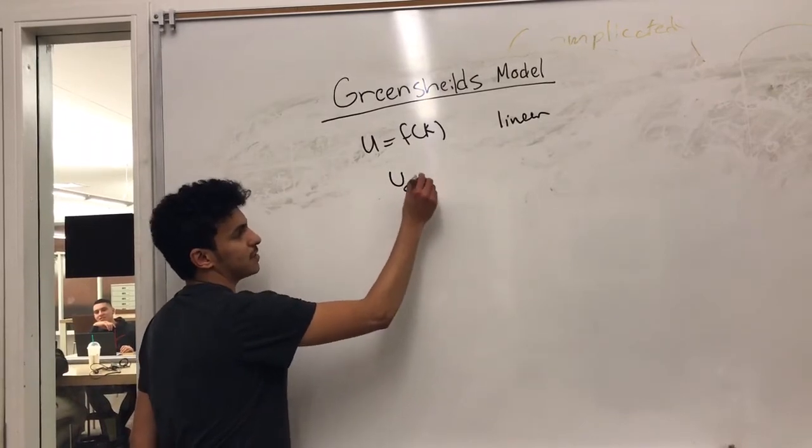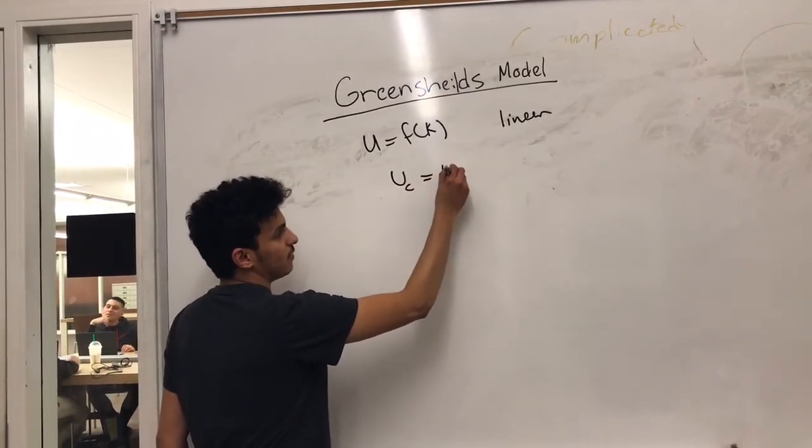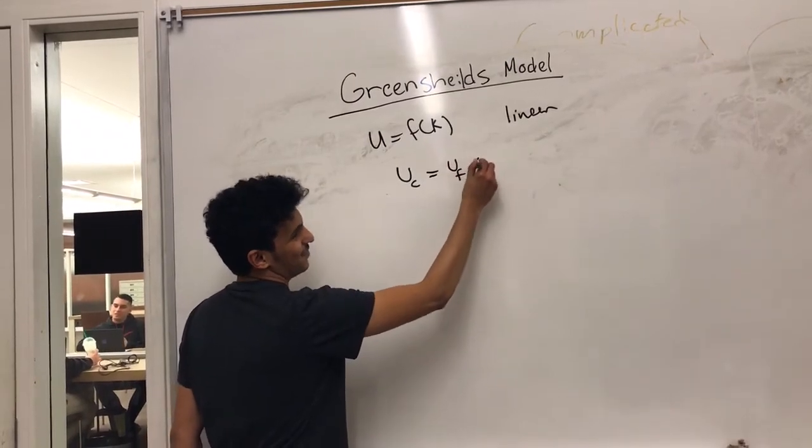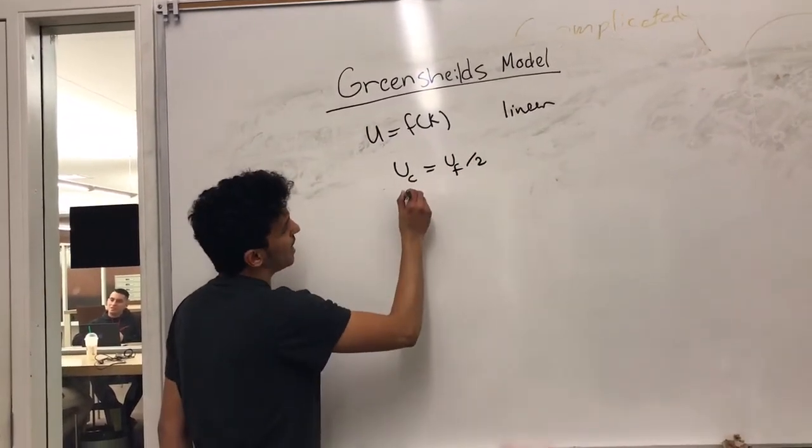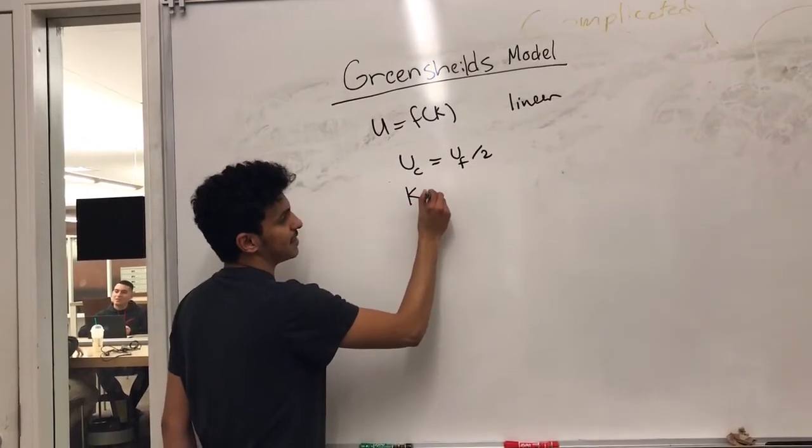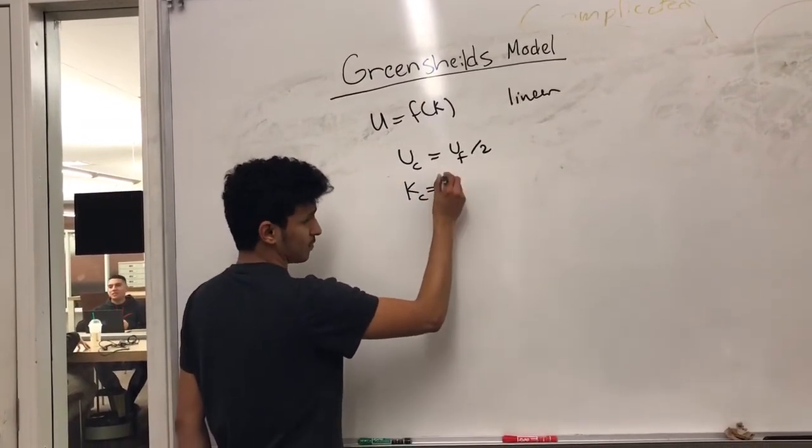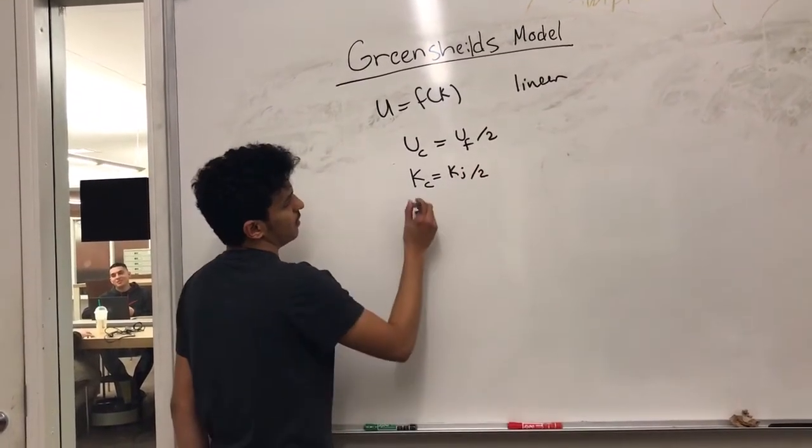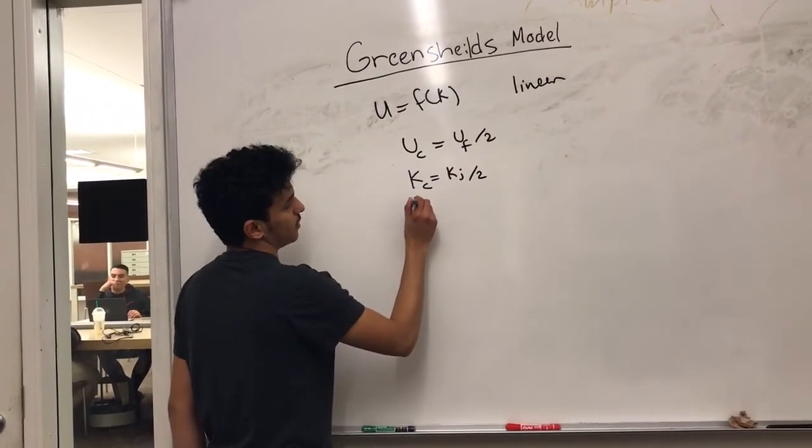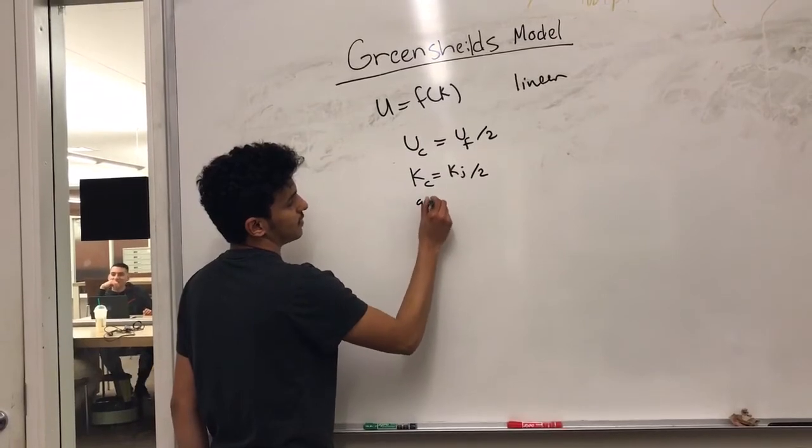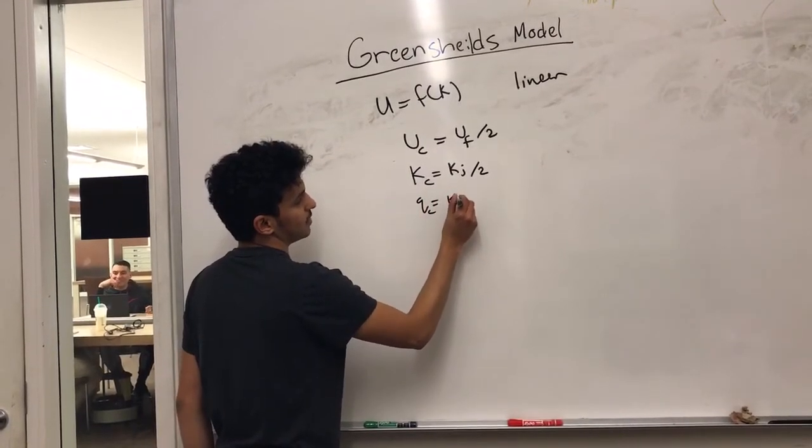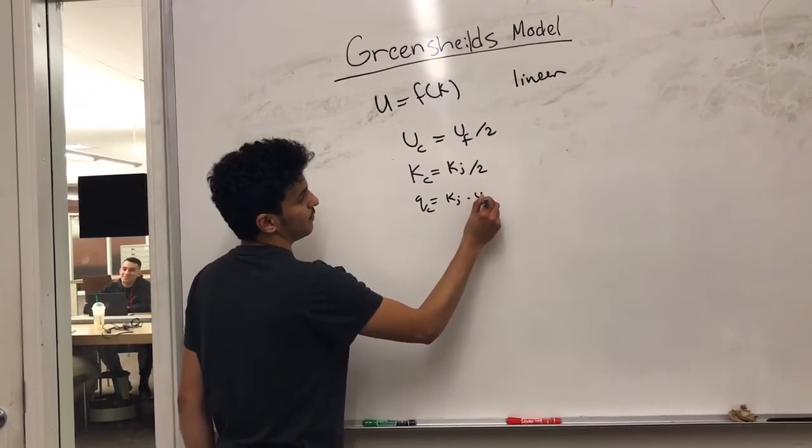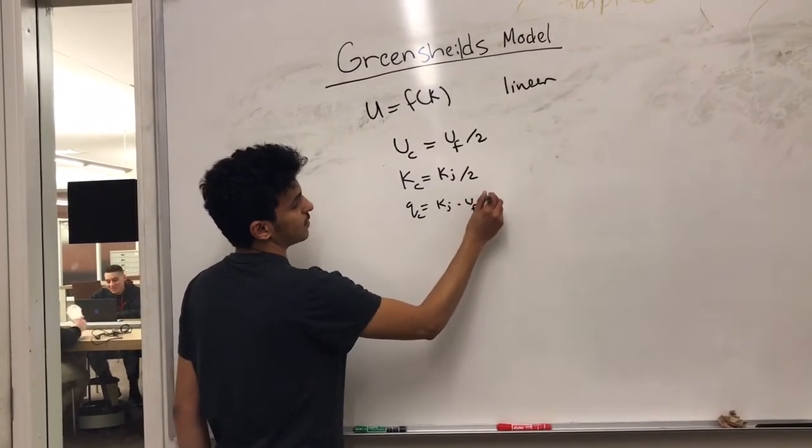Speed at capacity equals free flow speed over 2. And the density at capacity equals jam density over 2. And the last one is capacity equals jam density multiplied by free flow speed over 4.